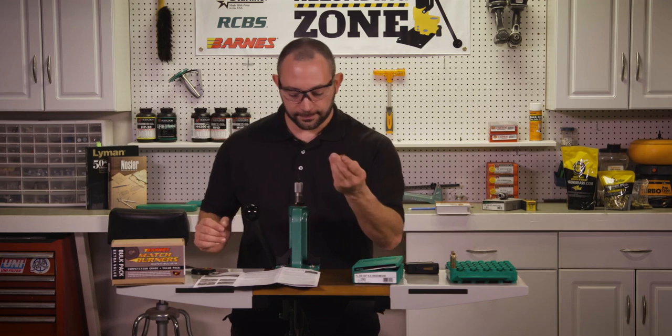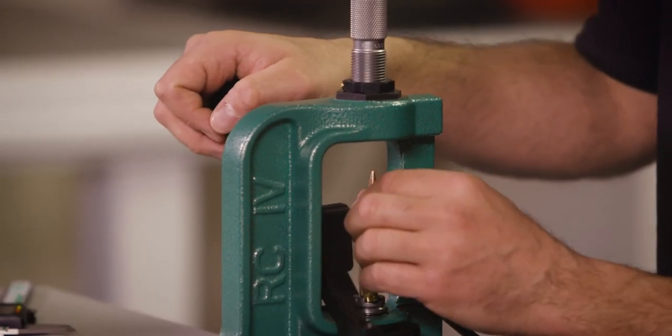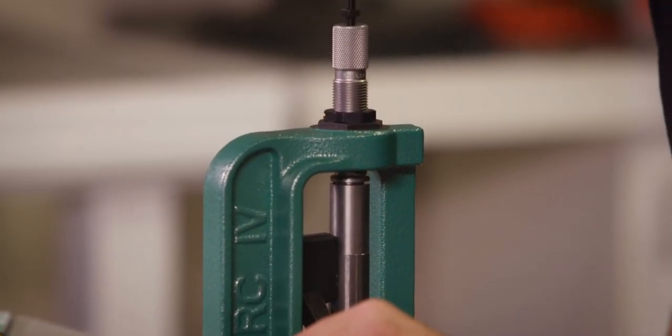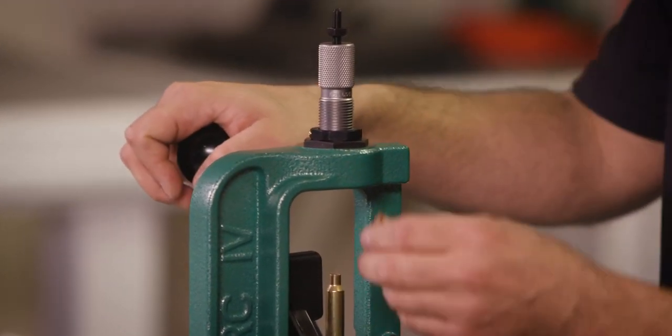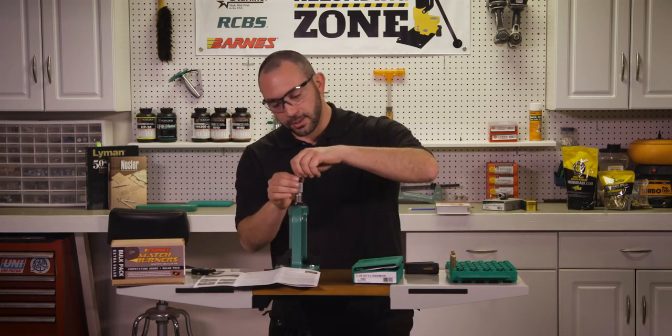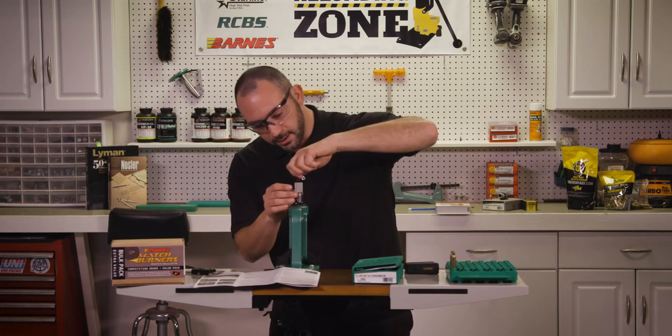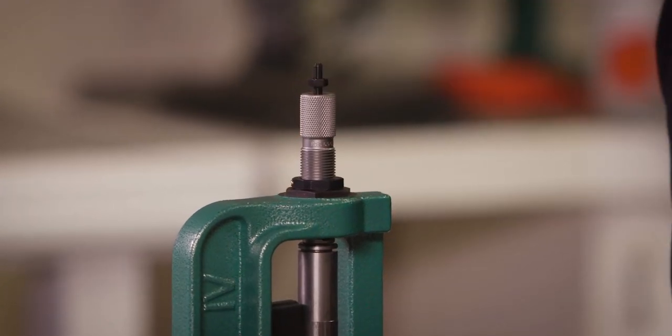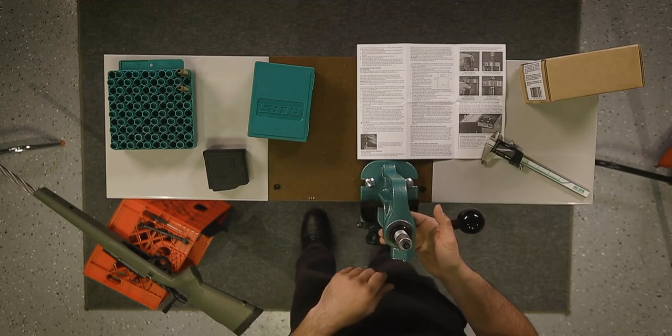Next we pick up our bullet and we start seating it. It's as easy as putting it on top of the case and running it up into the die. That first stroke, we shouldn't feel any resistance at all because we have the seating stem backed all the way out. And that's exactly what we want. So we'll put it back up. Now we start turning the seating stem down. Eventually that seating stem is going to meet resistance. The resistance that it meets is going to be the ogive of the bullet. We'll pull this down. The bullet is stuck into the die. That shows you that you're doing it right.